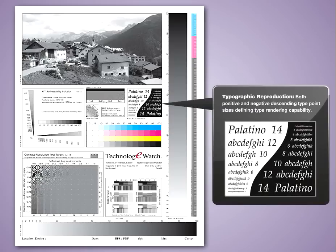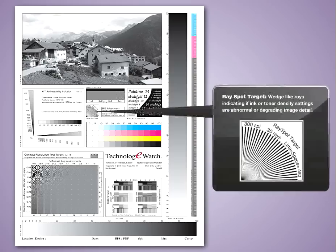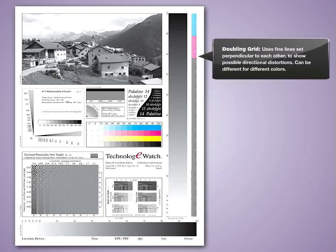Both positive and negative descending type point sizes defining type rendering capability. Ray spot target: wedge-like rays indicating if ink or toner density settings are abnormal or degrading image detail. Doubling grid: uses fine lines set perpendicular to each other to show possible directional distortions.